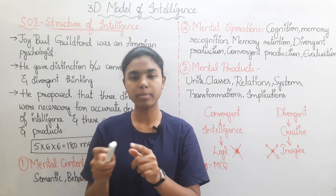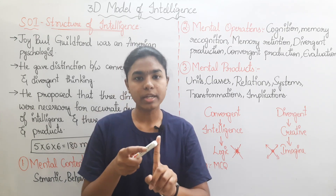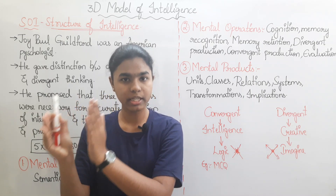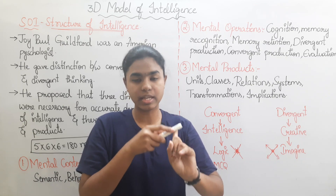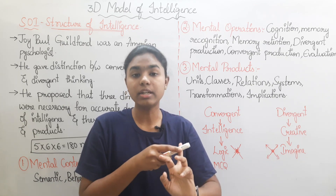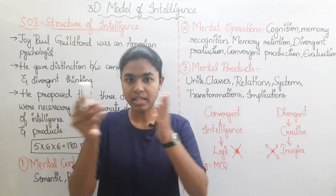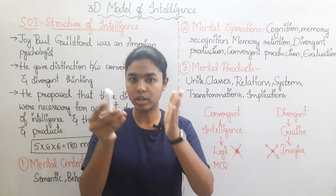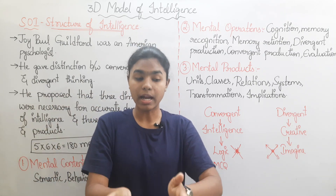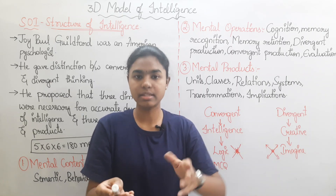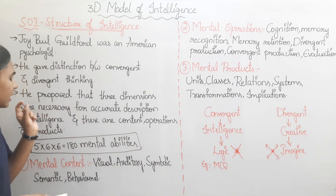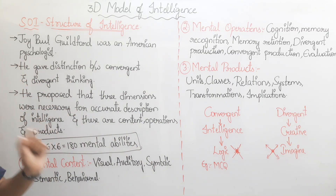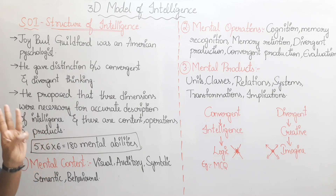Content refers to the full knowledge of a topic. Operations refers to the knowledge we apply in real life situations. Product is the result — when you have content knowledge and apply it through operations, the outcome is the product.